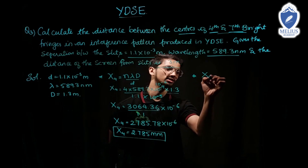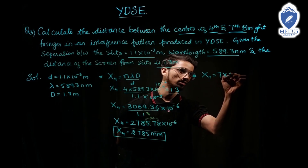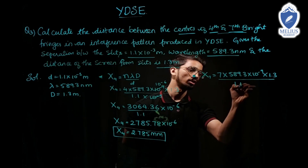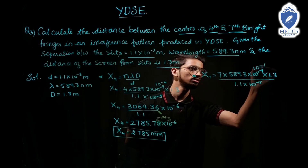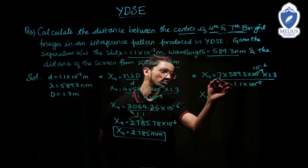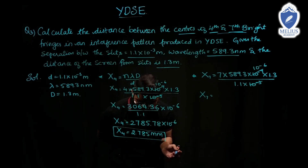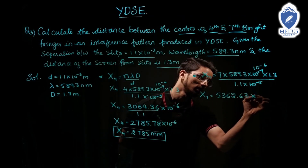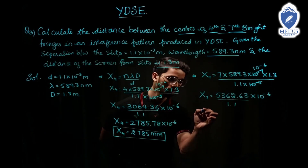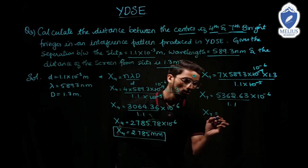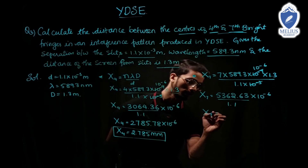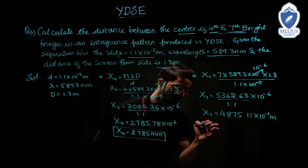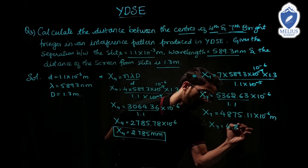X7 equals 7 into 589.3 into 10⁻⁹ into 1.3 divided by 1.1 into 10⁻³. Cancelling gives 10⁻⁶. Calculating: 7 into 589.3 into 1.3 equals 5362.63 into 10⁻⁶ divided by 1.1 equals 4875.11 into 10⁻⁶ meter. Therefore X7 equals 4.875 millimeter.